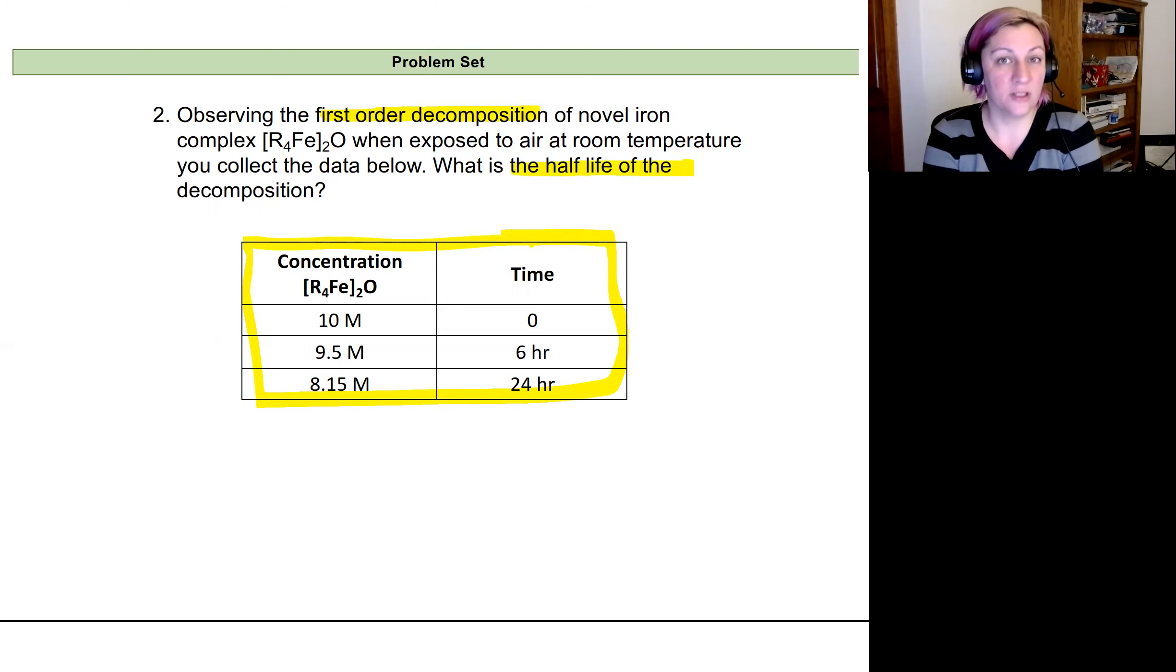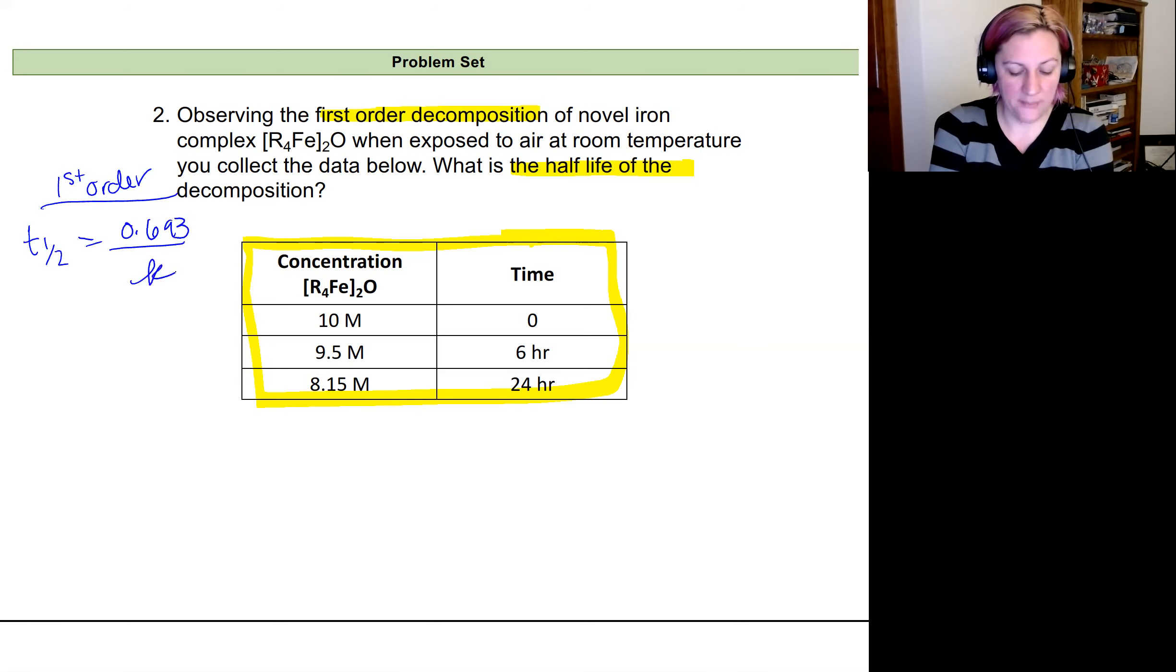So I already know it's a first order decomposition, which is extremely helpful. That means I'll be able to use some of my equations that I already know. So I know my half-life equation for first order is equal to 0.693 divided by K. And I know my rate law as well. My rate law is equal to the natural log of my concentration at time T over my initial concentration. This is the integrated rate law over T.